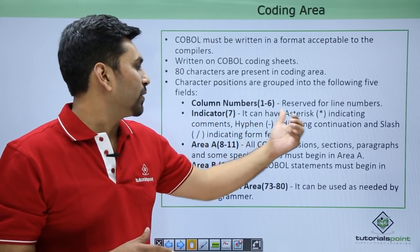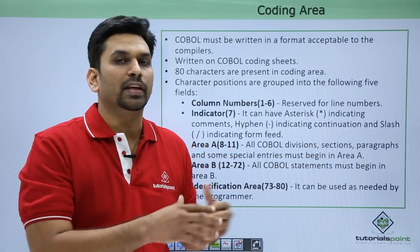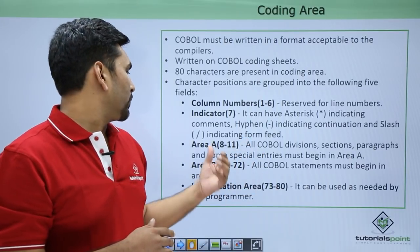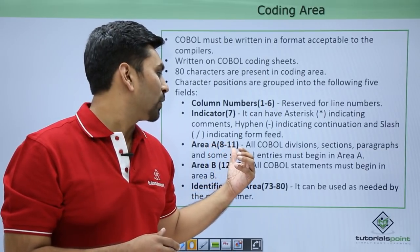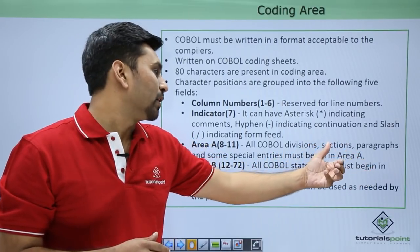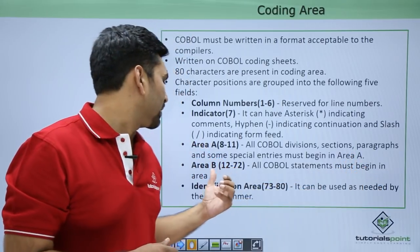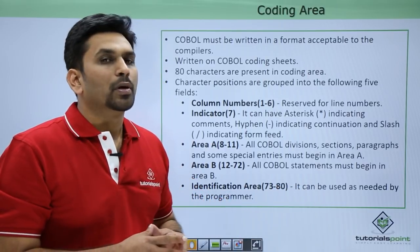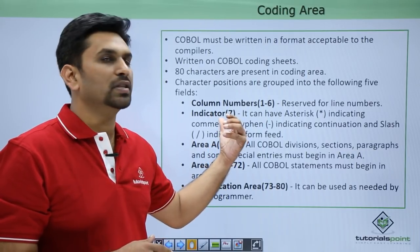Column 7 is the indicator area. If you mention an asterisk, that line becomes a comment line. If you mention a hyphen, it indicates continuation of the previous line, and a slash indicates form feed. Area A starts from columns 8 to 11 — all COBOL divisions, sections, paragraphs, and some special entries must begin in area A. Area B spans columns 12 to 72, where all COBOL statements must begin. The identification area, columns 73 to 80, can be used as needed by the programmer but is normally not used.